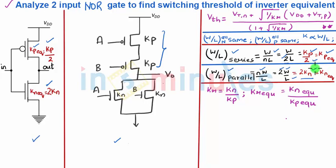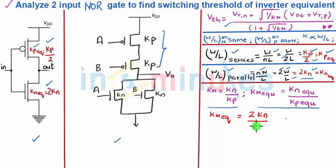Now we need to find the switching threshold, whose expression is written above: switching threshold equals threshold voltage plus square root of (1/KR) times (VDD plus VTP), all upon 1 plus square root of (1/KR). KR equivalent is KN equivalent divided by KP equivalent, which is 2KN divided by KP/2, giving 4KN/KP. We substitute KR equivalent in place of KR to find the switching threshold for the 2-input NOR gate inverter equivalent.